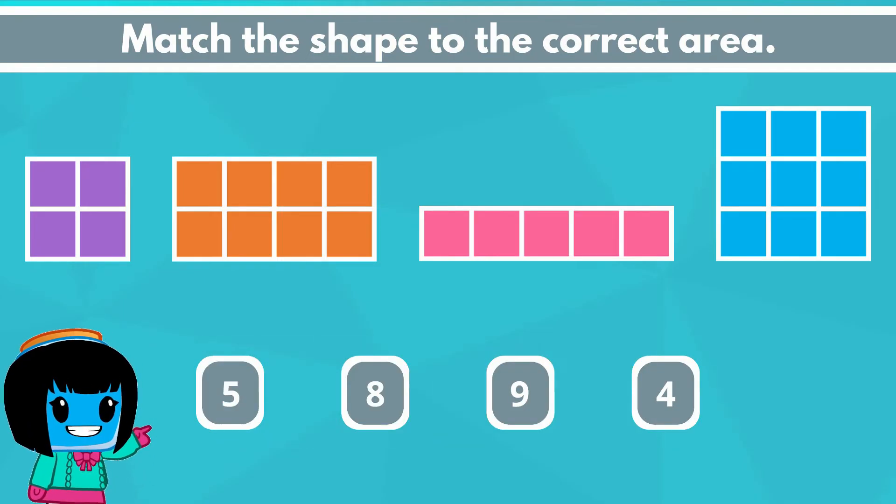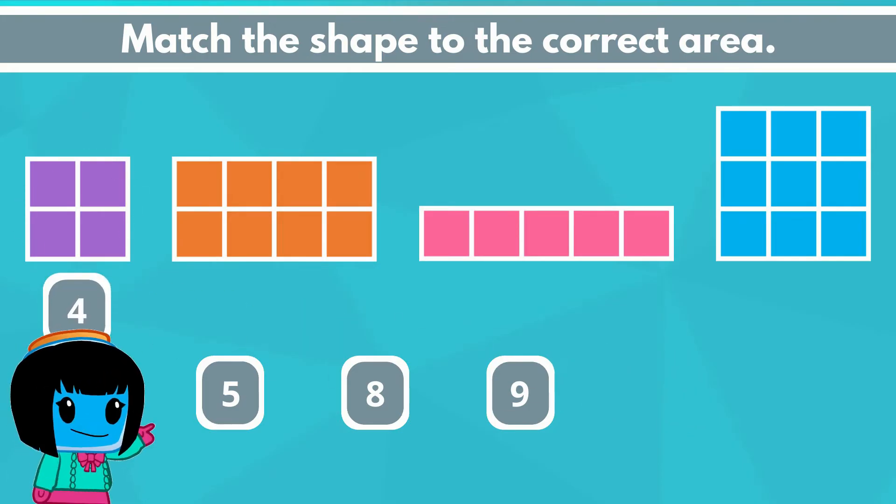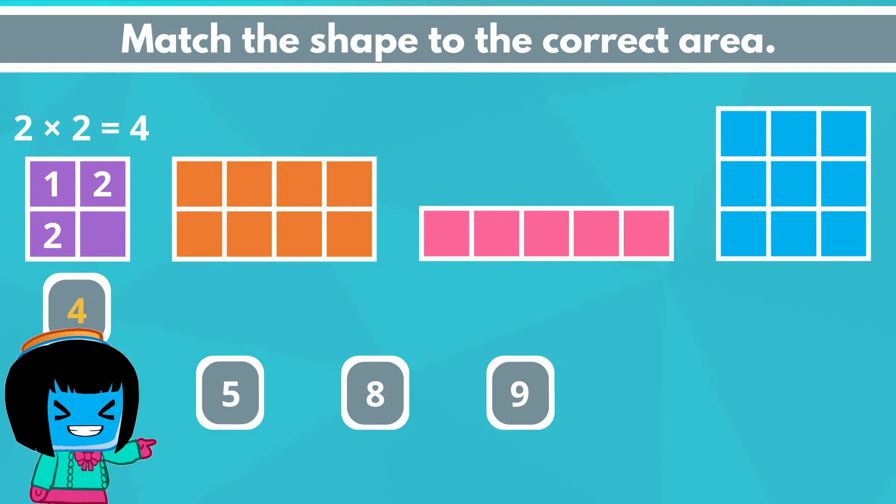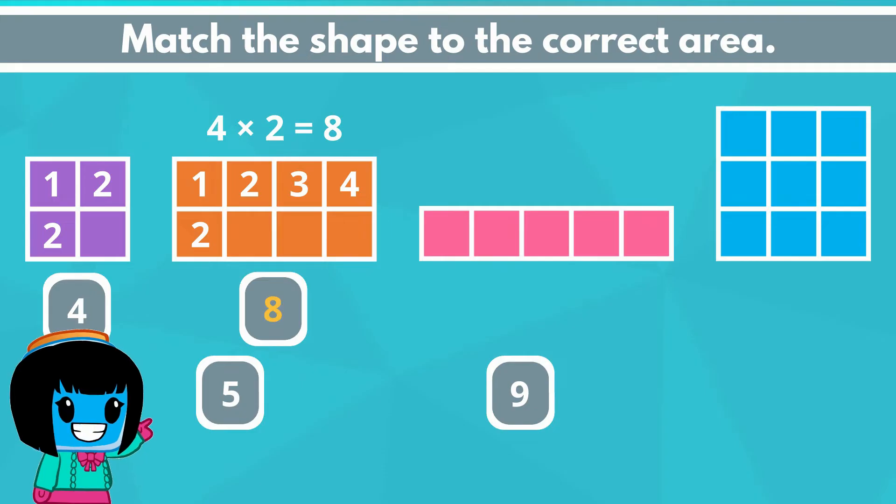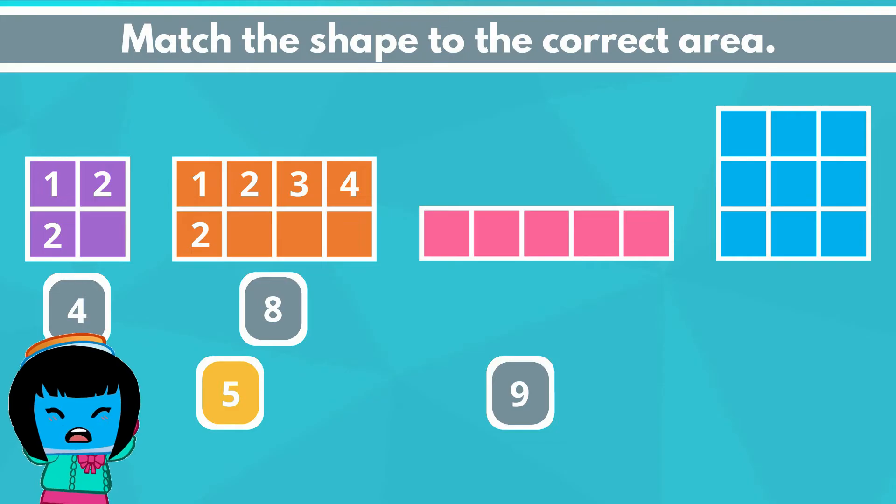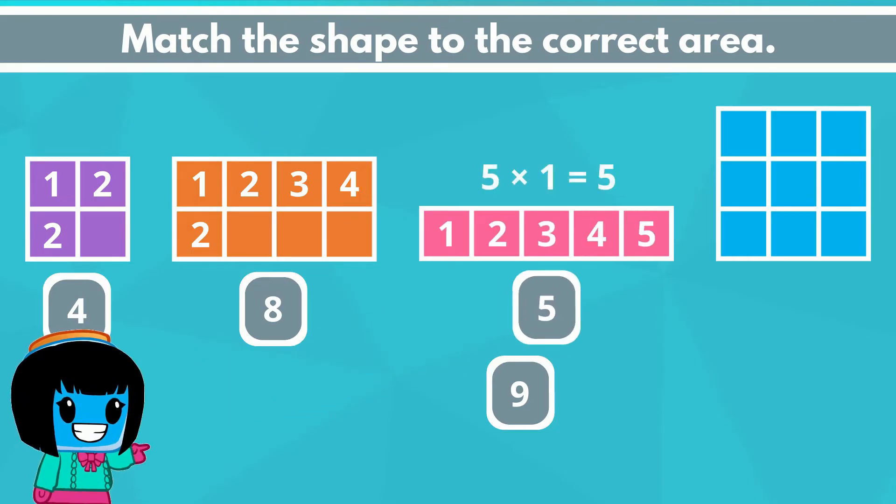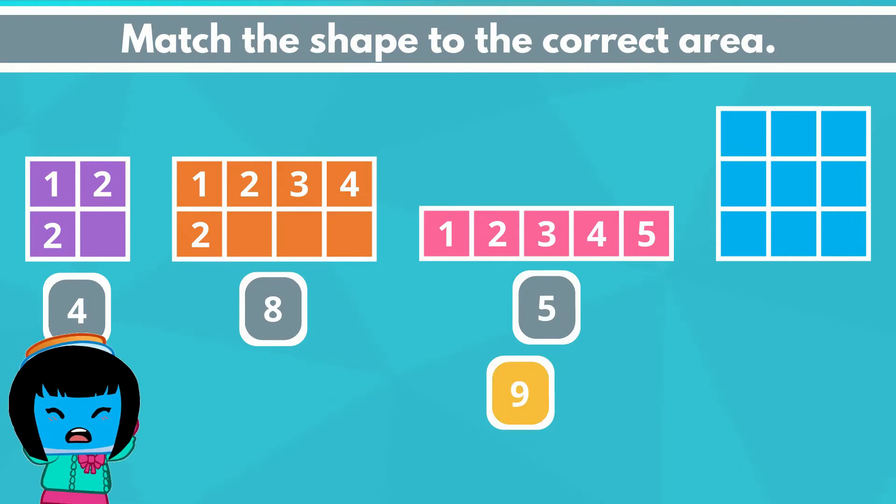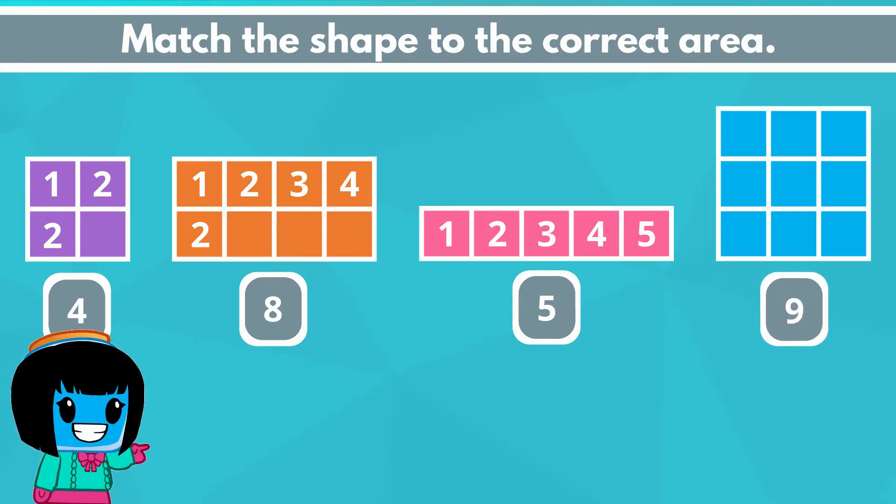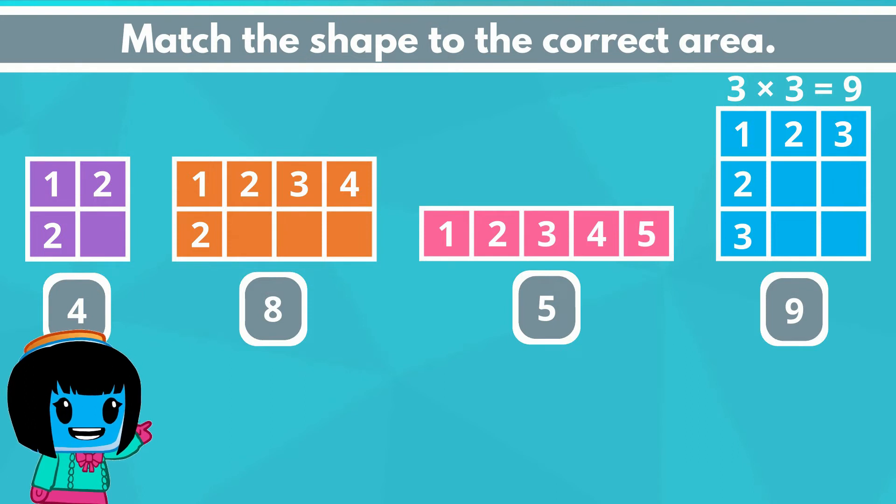The area of the first shape is four square units since two times two equals four. The area of the second shape is eight square units since four times two equals eight. The area of the third shape is five square units since five times one is five. And finally the last shape is left with an area of nine square units which is true because three times three equals nine.